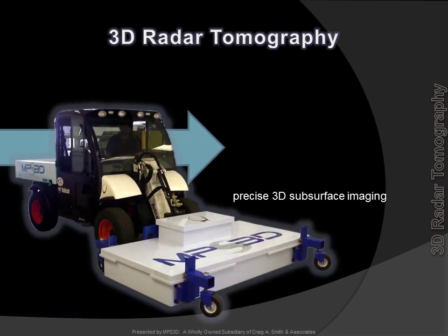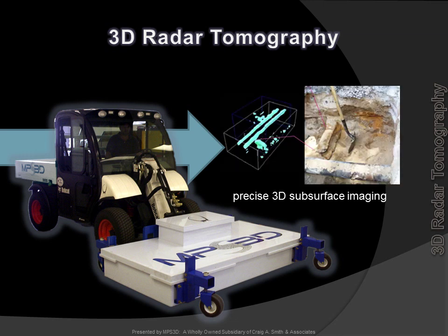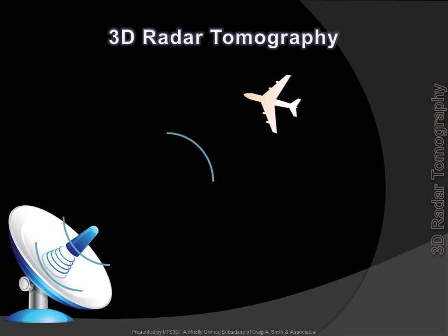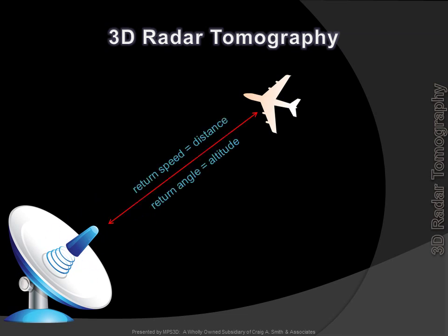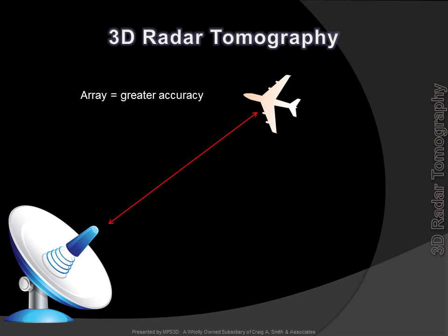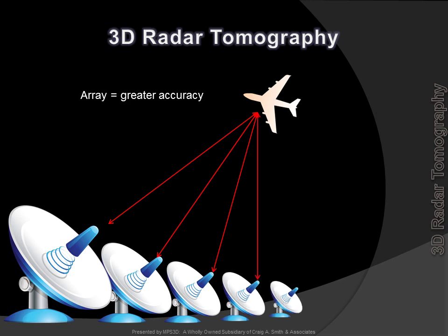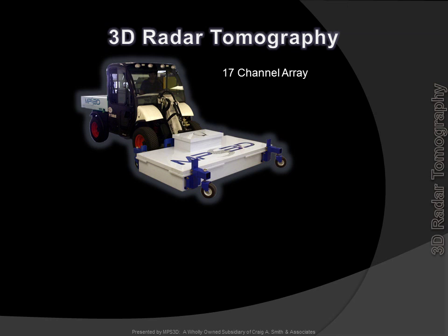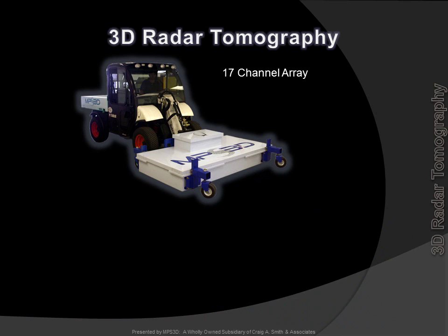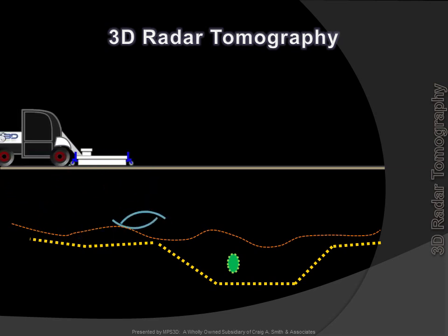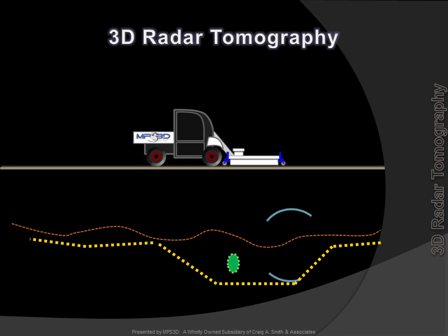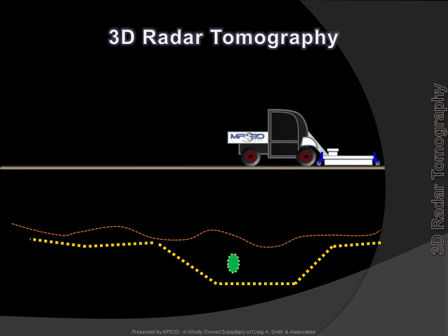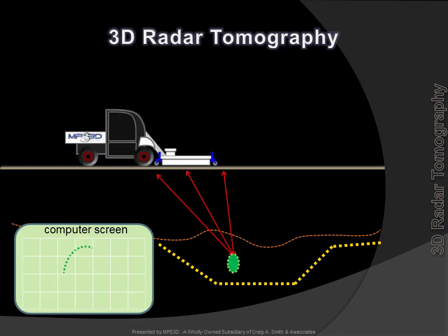Radar Tomography provides geospatially precise imaging of the underground, including anomalies not normally identified or located by traditional SUE efforts. Radar Tomography works in a similar fashion to more familiar radar systems like aircraft radar, where data from the return signal provides information on the target. When subsystems are multiplexed or arrayed, the fidelity improves, providing greater accuracy. Radar Tomography utilizes a 17-channel array of radar antennas — multiple antennas and multiple signals equals incredible precision.